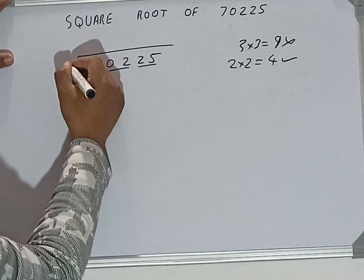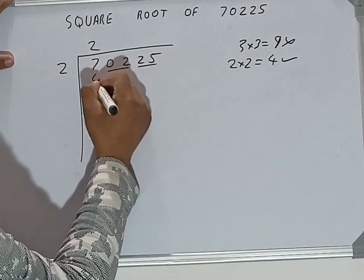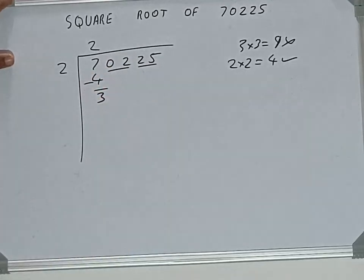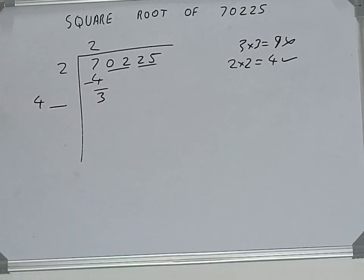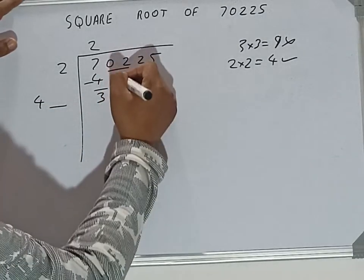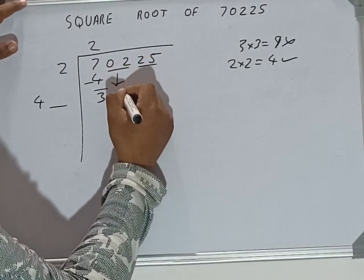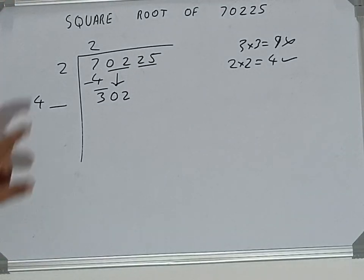So two here and two here: four. Subtract, three will be left. Now two into two we did, so add both. Two plus two will be four. Write it here and keep a digit extra, and this number we need to make it big. So bring the next pair down and it will be 302.